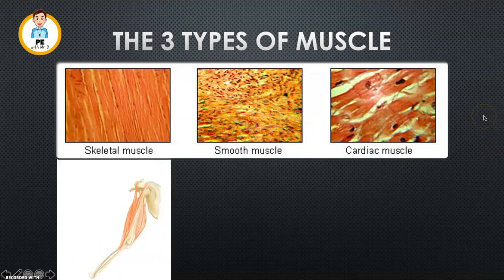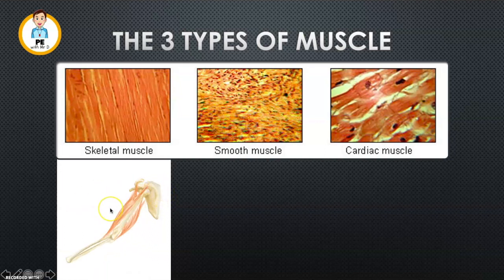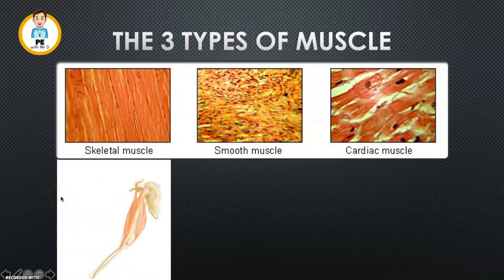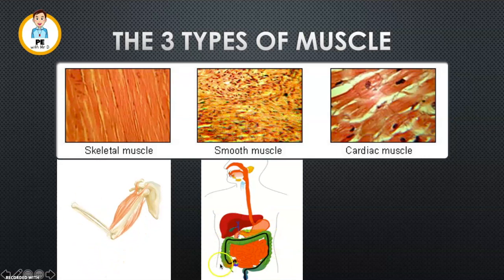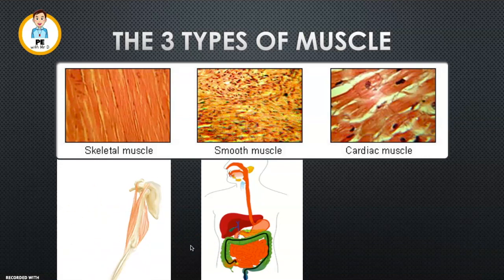What do these mean? Skeletal muscle — it gives you a bit of a hint: skeleton, skeletal. So that's about the bones and the muscles — the muscles we can see on the outside, the muscles we can contract voluntarily. These are called voluntary muscles. Number two, our smooth muscle. These are the muscles in our digestive system and other organs. They are called involuntary muscles because we can't turn them on and off — we can't control them, which is a good thing.